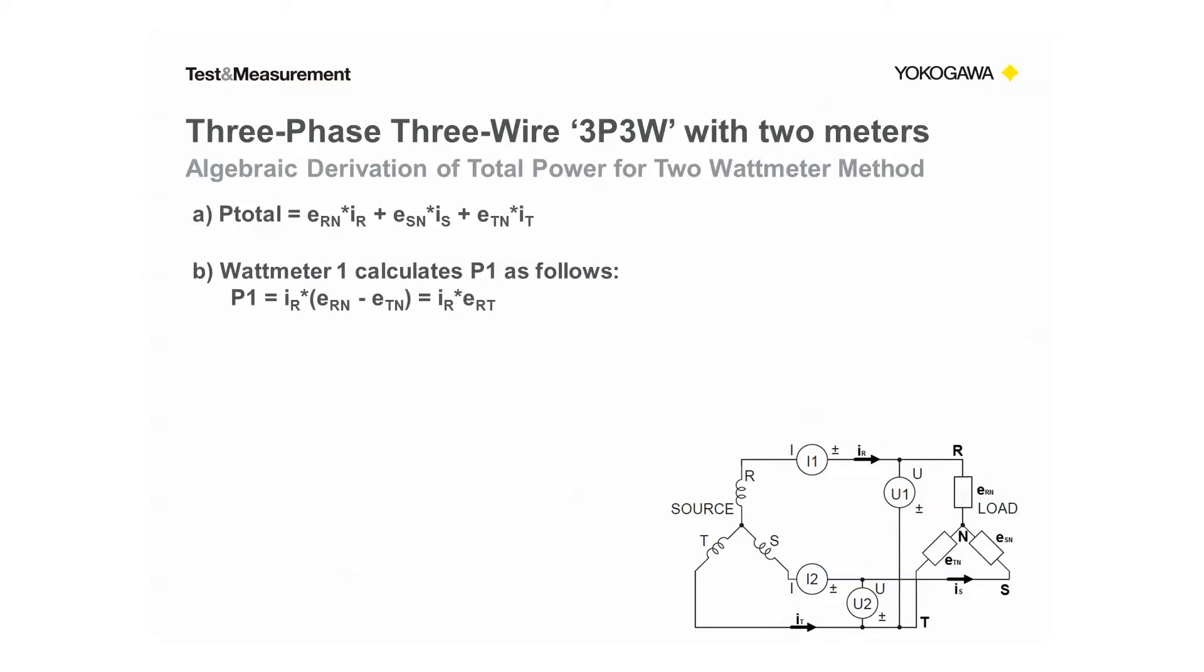In equation B, I've written the total power seen by wattmeter one as both IR times ERN minus ETN, again internal voltages, and also as P1 equals IR times ERT.